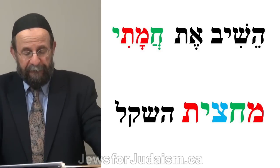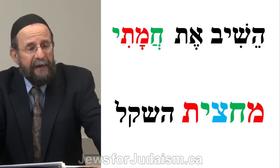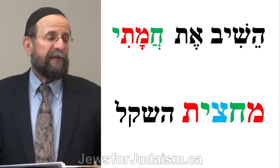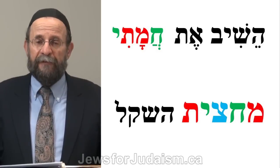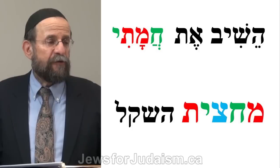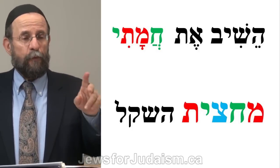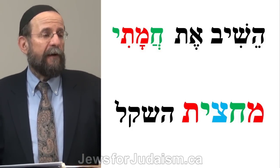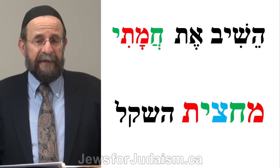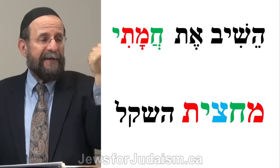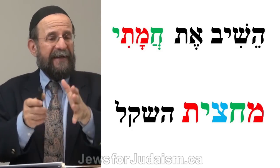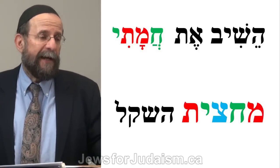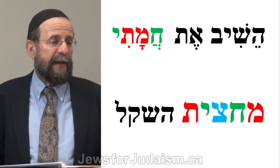As it says in Proverbs chapter 10, verse 2: tzedakah tzid mimavet — charity saves from death. So what does it mean when the verse says Pinchas turned around God's anger? The word chamati — God's wrath — has the middle letters Mem and Tof (the red letters for death), and the outer letters are Chet and Yud — Chai, life. What Pinchas did was turn those letters around — he brought Chai close, stopped the plague, and pushed death away, reversing the order just like the word Machatzit, where the inner word is Chai for life.